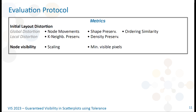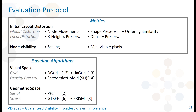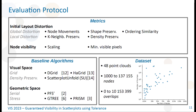We evaluate GIST on metrics that measure the distortion of the initial layout, both globally and locally, and the node's visibility that is related to the compactness of the solution layout. These metrics are quite standard and inspired, if not directly taken, from state-of-the-art studies. Please refer to the article for detailed definitions of these metrics. We compare GIST with the algorithms that are the closest to it in terms of behavior and objectives. We also compare with both visual space and geometric space algorithms to highlight the differences. Finally, all these algorithms are evaluated on 48 scatter plots, with between a thousand and more than a hundred thousand nodes, and between 0 and 10 million overlaps.